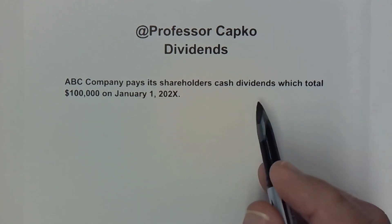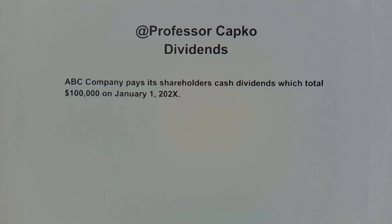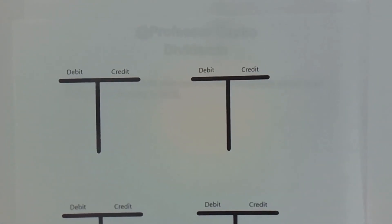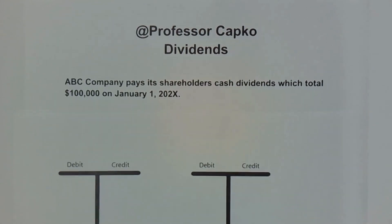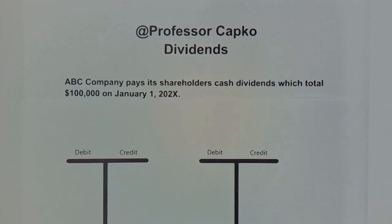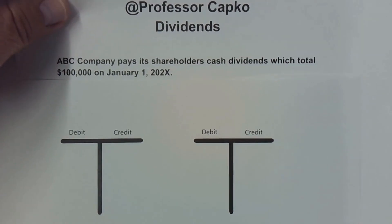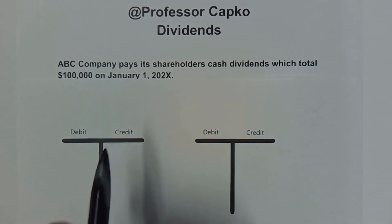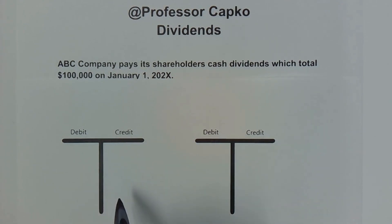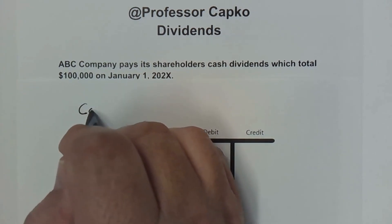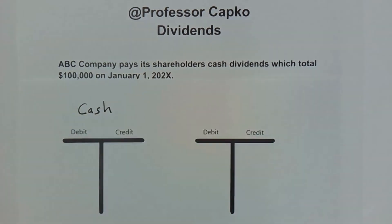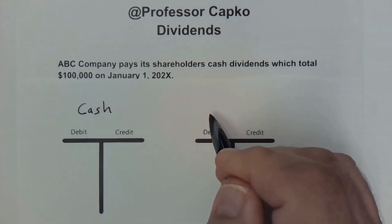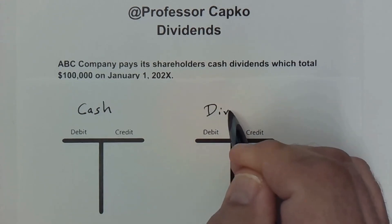All right, so we need to figure out what this transaction is going to look like. I like to always start with a T-chart — it makes it a little easier to visualize what we're doing. I have these T-charts with the debits and credits listed. We know that cash is going to be one of the accounts we're working with, so I'll label one of these cash, and the other one we're going to be working with is dividends.